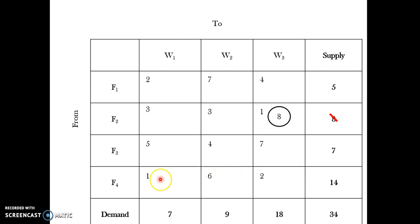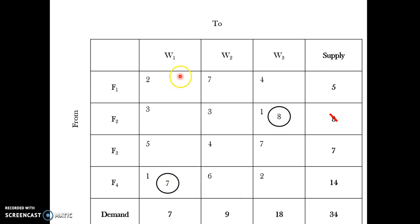I search again for the minimum cost cell. It is once again the cell with cost 1 rupee at F4→W1. I allocate 7 units there because W1 requires only 7, even though F4 has 14 units available. The requirement of W1 is fulfilled and I cross it off.